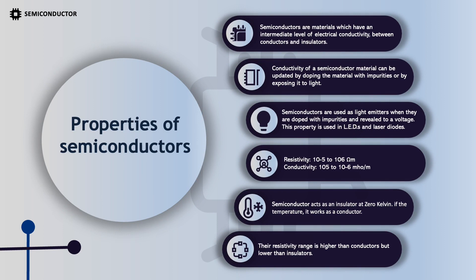Properties of semiconductors: Semiconductors have an intermediate level of electrical conductivity, between conductors and insulators. The conductivity of a semiconductor material can be altered by doping the material with impurities or by exposing it to light. Semiconductors are used as light emitters when they are doped with impurities and subjected to a voltage — this property is used in LEDs and laser diodes.